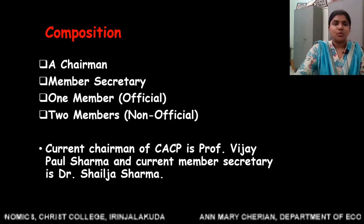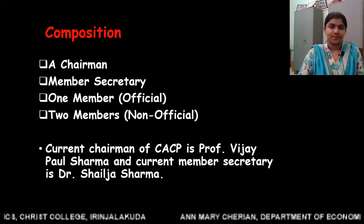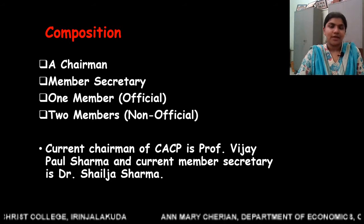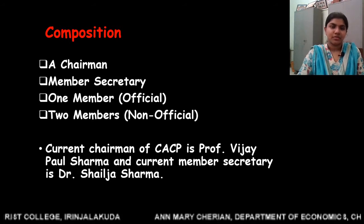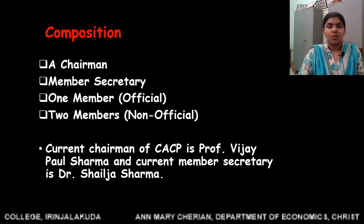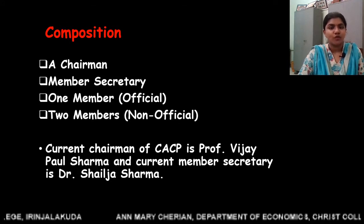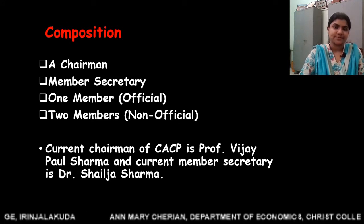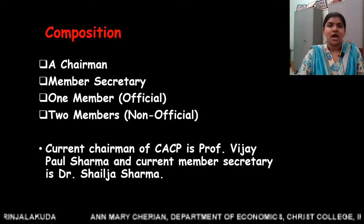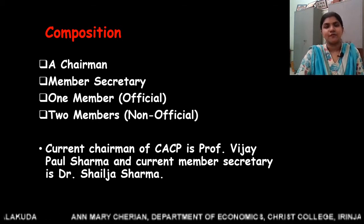Now let us move on to the composition of CACP. CACP has a chairman, a member secretary, one official member, and two non-official members. The two non-official members are mainly representatives of farmers.